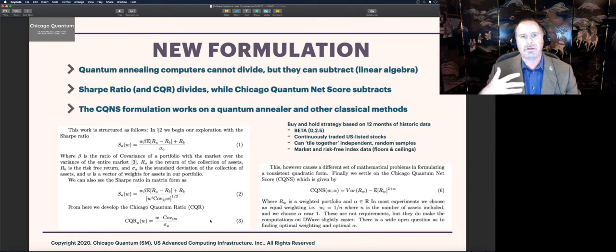What we find is that the Chicago quantum ratio doesn't use any of the nominal things you might worry about, like nominal return not adjusted for inflation, interest rates, or how much the stock market goes up. The problem with that is the answers aren't really comparable from period to period if inflation changes. Chicago quantum ratio is a real indicator. Now, the Chicago quantum net score takes the variance of that weighted portfolio minus the expected return of that portfolio, also weighted, but raised to a power. We call that the CQNS power and it's 2 plus alpha.